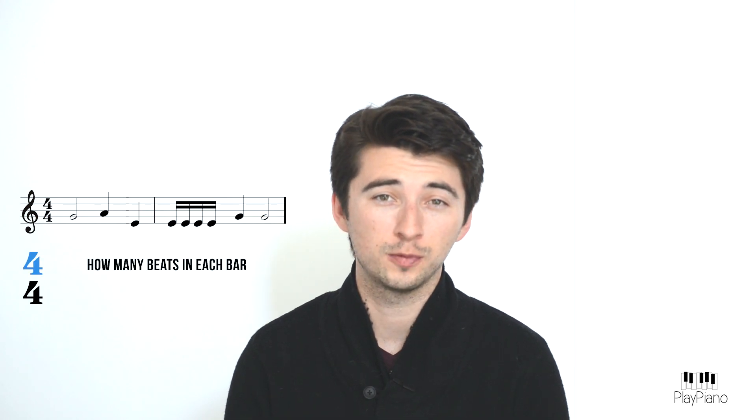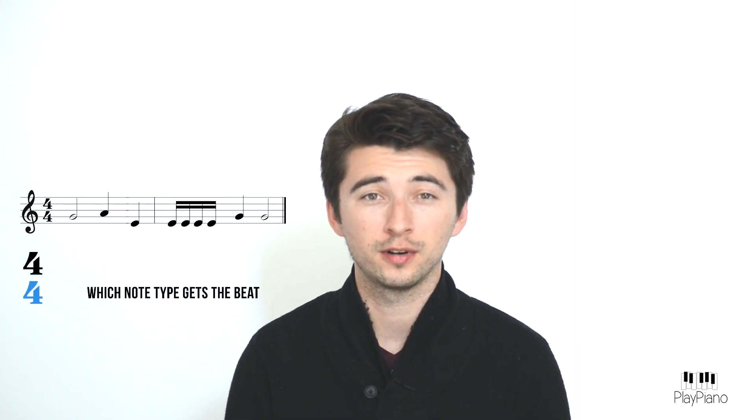Here is an example. Here we have a time signature of 4-4 and two bars or measures of music. The two numbers in the time signature mean two different things. The top number tells you how many beats are in each bar, while the bottom number tells you what kind of note gets the beat.